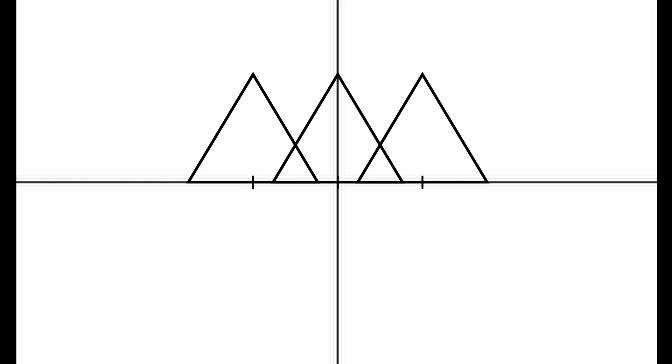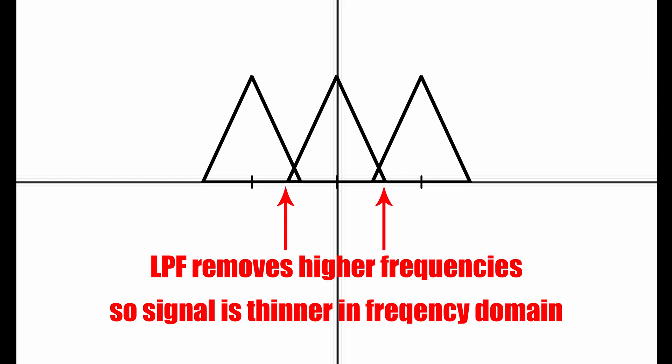If you know the frequency of your signal, just satisfy the sampling theorem. If you can't satisfy the theorem or don't know the frequency of your signal, you can first apply a low-pass filter to the signal before sampling, which makes the aliasing less prominent.